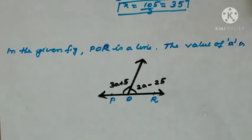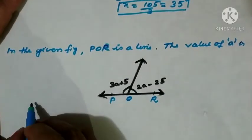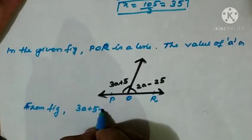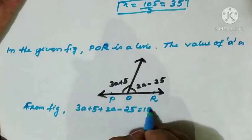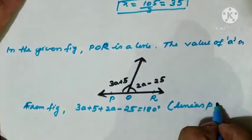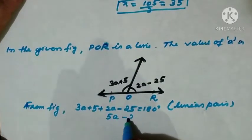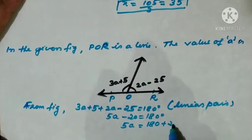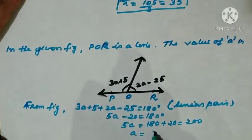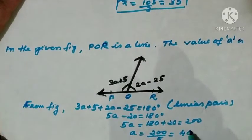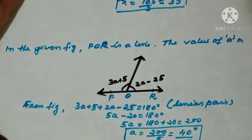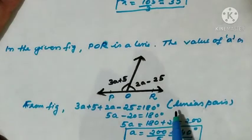From the figure, angles 3a plus 5 and 2a minus 25 form a linear pair. So: (3a plus 5) plus (2a minus 25) equals 180 degrees. Simplifying: 5a minus 20 equals 180, so 5a equals 200, giving a equals 40 degrees. These types of questions are based on the linear pair concept. Always write the reason — linear pair — when solving.